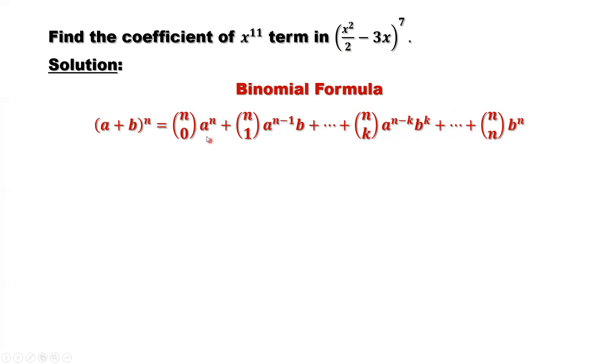In the right hand side, the power of a is decreasing from n to 0. The power of b is increasing from 0 to n. Those numbers nC0, nC1, nCk, nCn are Pascal triangle numbers.